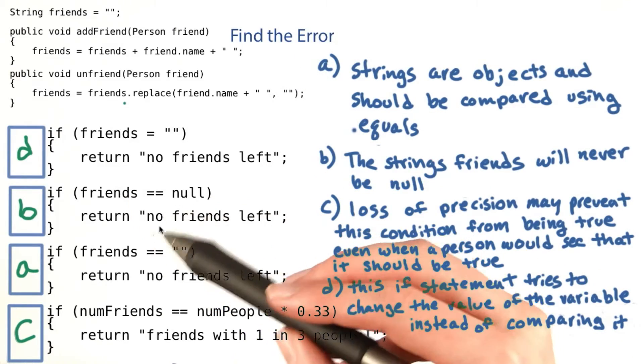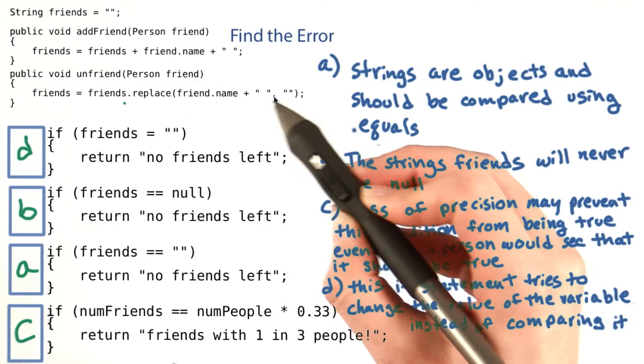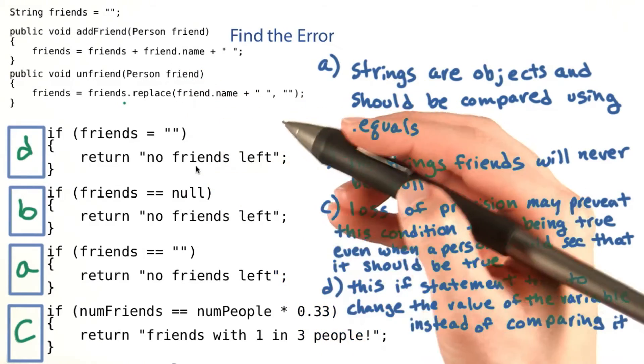In the second one, friends will never be null. No matter how many friends we remove, we just erase their names from the string. We don't reset the string to be null.